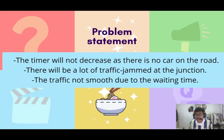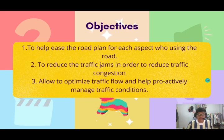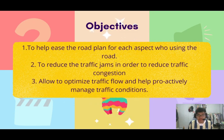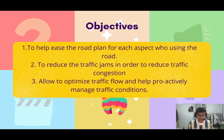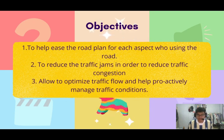The objectives of this project are: first, to help ease the road lanes for each road user; second, to reduce traffic jams and congestion; and third, to optimize traffic flow and help proactively manage traffic conditions — allowing all vehicle users to easily cross the junction without wasting their time.